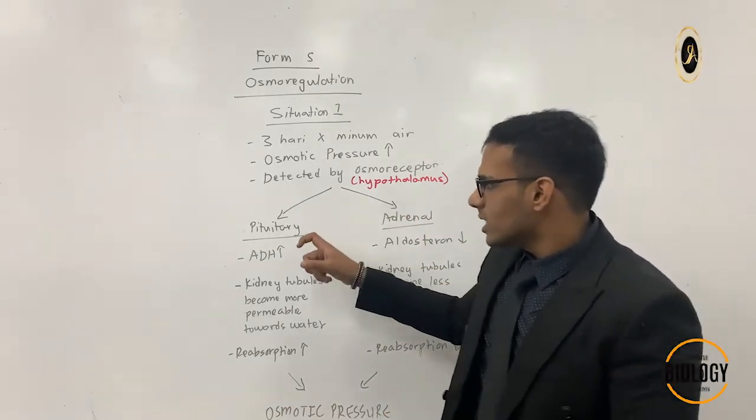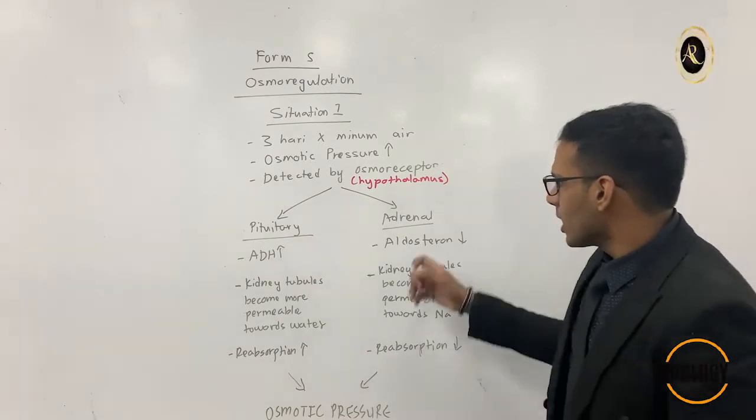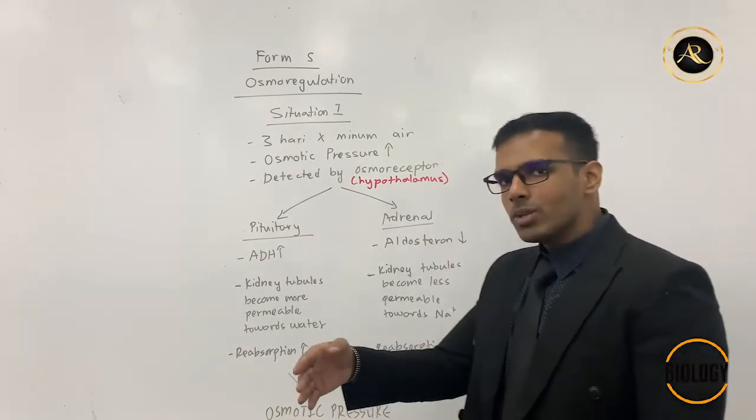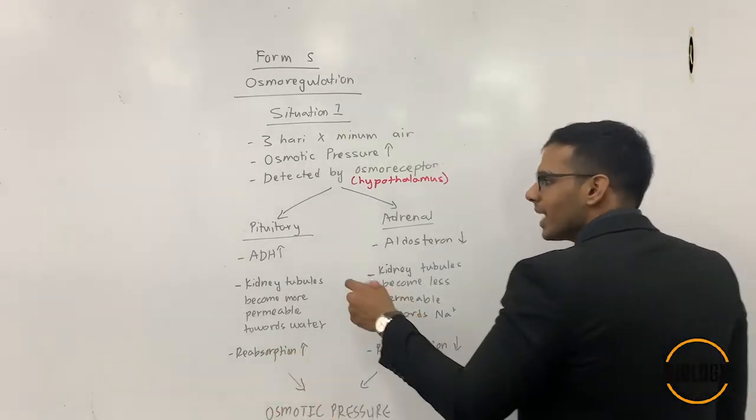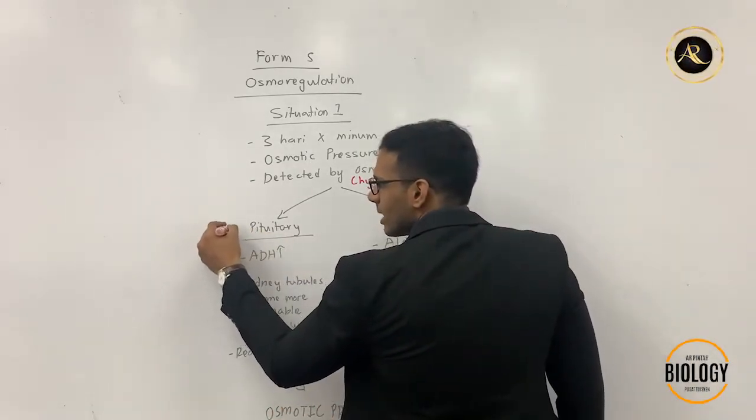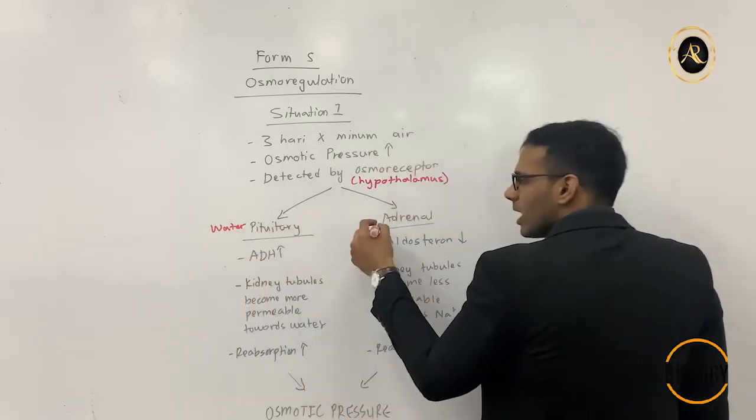Osmoreceptor detects this problem and it will trigger two hormonal glands. First hormonal gland is pituitary gland, second hormonal gland is adrenal gland. So pituitary gland and adrenal gland, they will work side by side in your body.